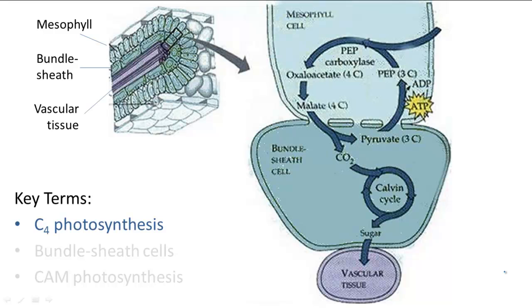In the C4 pathway, plants avoid transpiration by keeping their stomata only halfway open. This is a trade off though because the smaller the stomata opening, the less CO2 that can enter the plant.